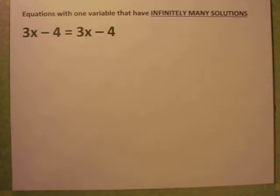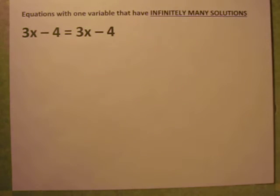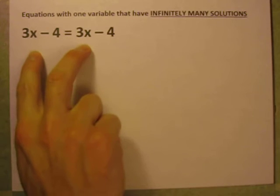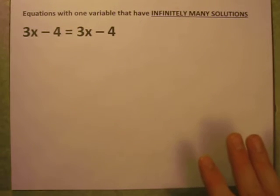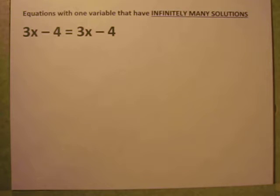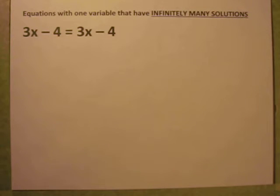In this video, I'd like to show you some information about equations with just one variable. X is the only variable — no other letters in here. We've got X's on both sides. So this is about equations with one variable that have infinitely many solutions, which sounds kind of crazy. We get in the habit of solving these equations and you always end up with X equals 2 or X equals negative 5. Well, some equations aren't like that — some can have infinitely many. I'd like to show you what they look like and why.